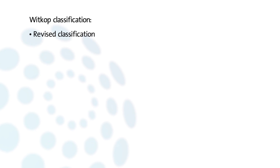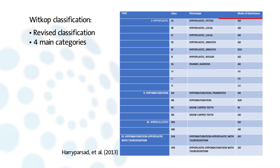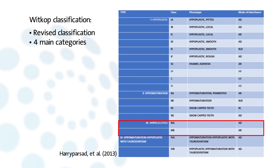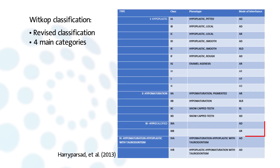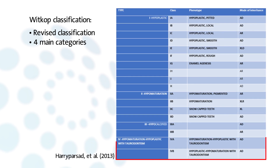In 1988, Witkop proposed a revised classification of amelogenesis imperfecta (AI), considering the nature of the enamel defects as well as the mode of transmission. AI was divided into four main categories: type 1 hypoplastic, type 2 hypomaturation, type 3 hypermineralized (also named hypocalcified), and type 4 hypomaturation and hypoplastic with taurodontism, with subtypes.